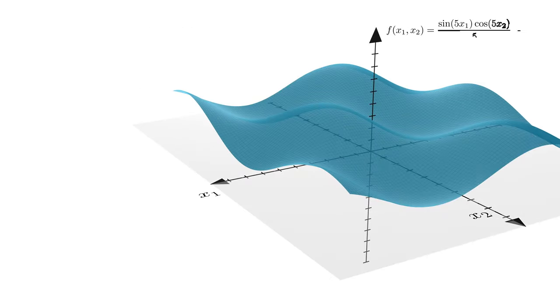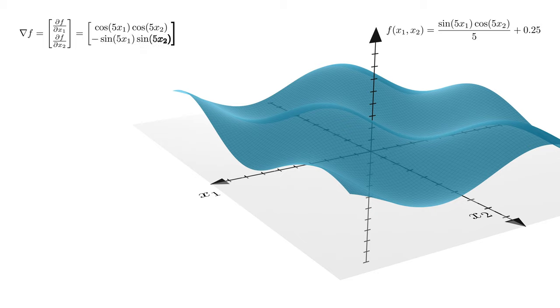Lastly, suppose we have a multi-variable function, like f equals sine of 5x1 times cosine of 5x2 divided by 5 plus 0.25. In this case, we need to calculate the gradient of f, the vector of partial derivatives of f with respect to x1 and f with respect to x2. Then we proceed just like the single variable case, except here we make what's called a gradient step, where we simultaneously move in the best x1 and x2 direction. And as usual, we repeat this process a bunch of times until we converge on a minimum.